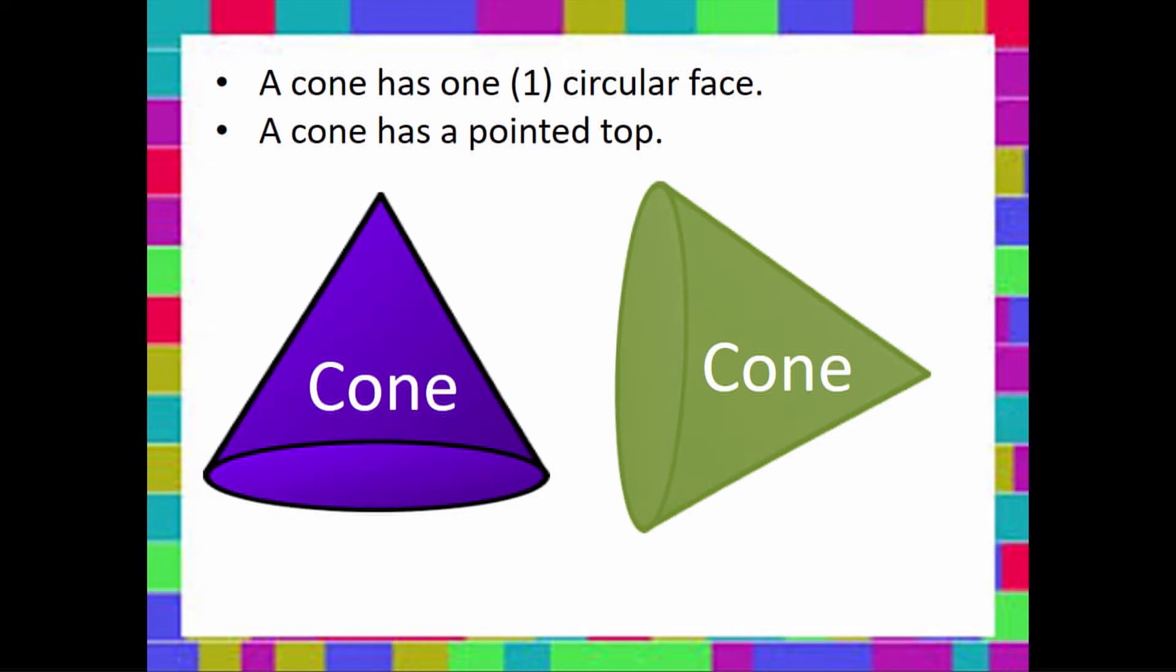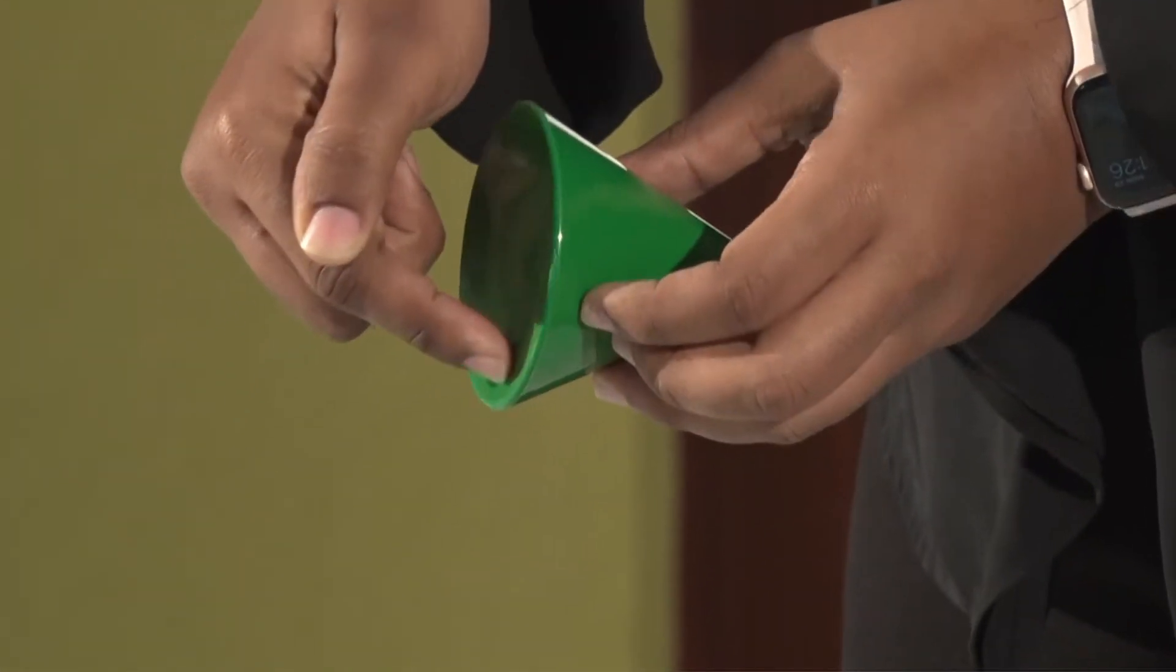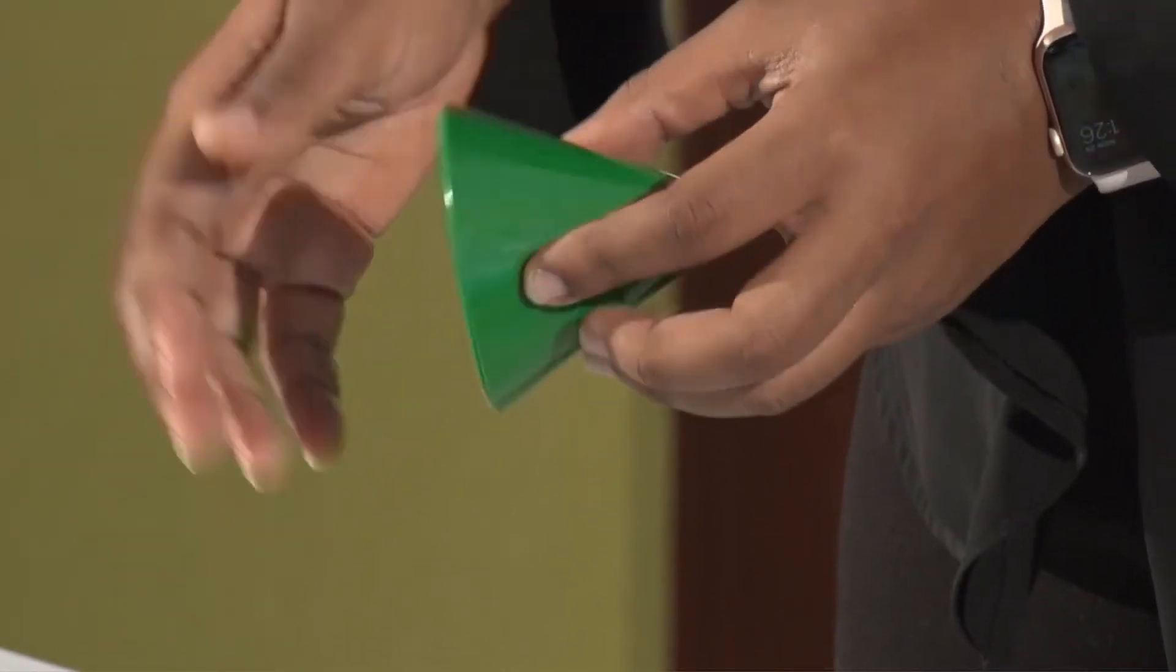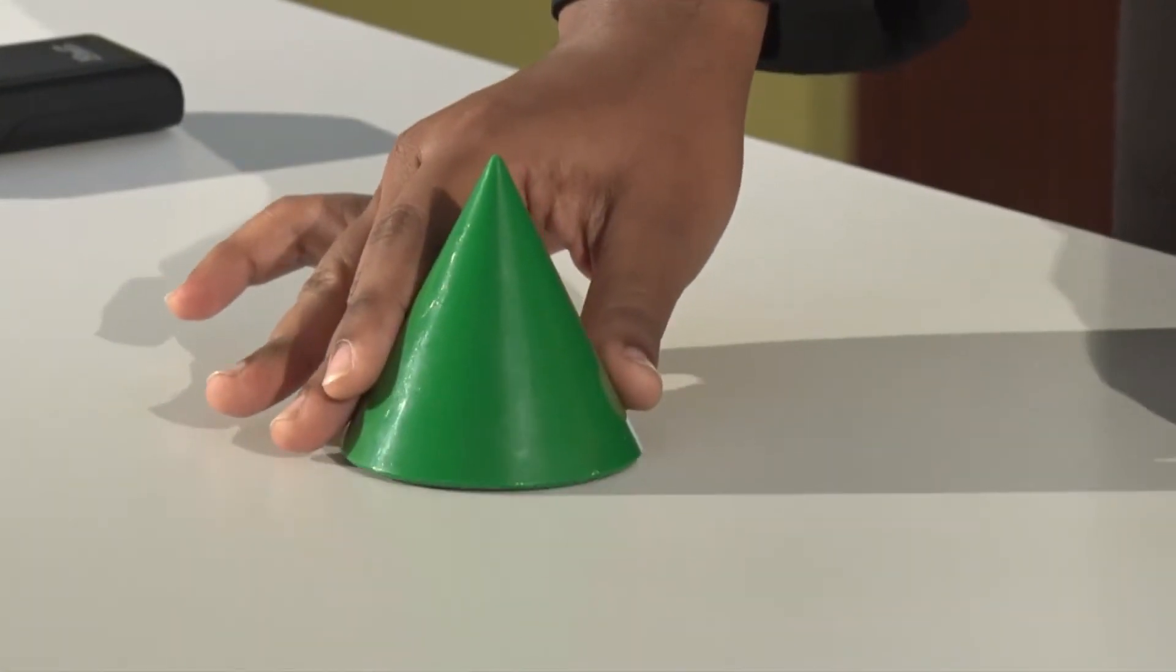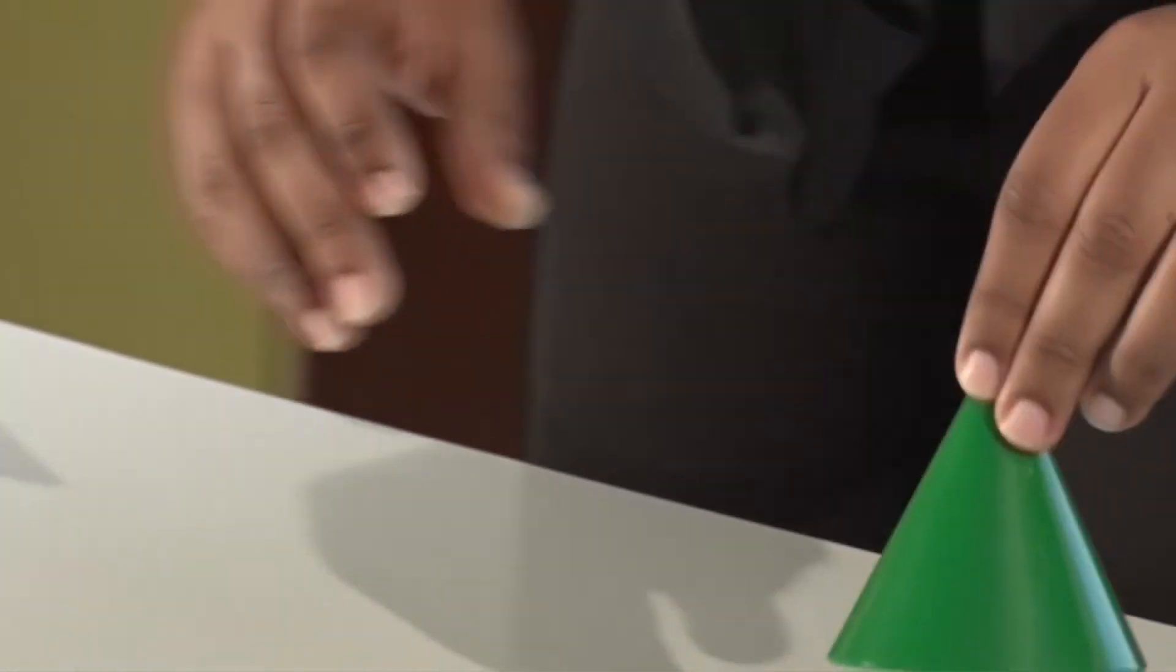A cone. A cone has one circular face. A cone has a pointed top. Here I have a cone. We see that the face is circular and it is flat and it is pointed.